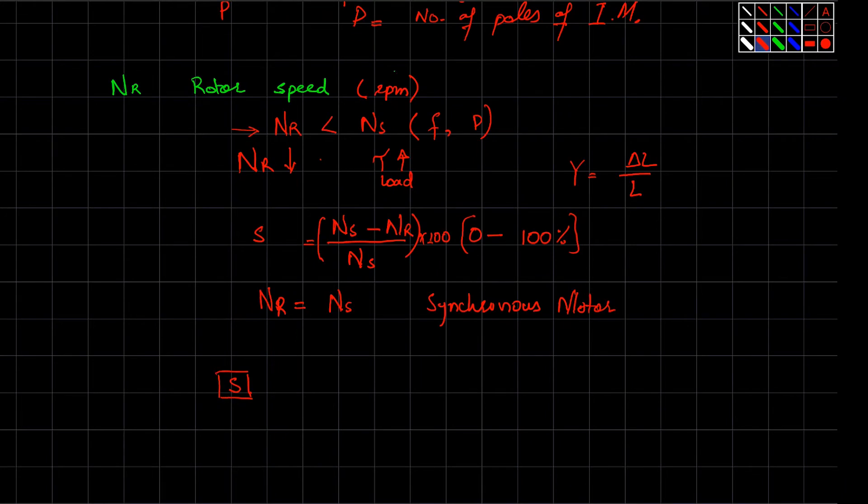For example, when slip equals to one, you can say that motor is stationary. Motor is at rest. And when slip is zero, then your motor is running at synchronous speed.